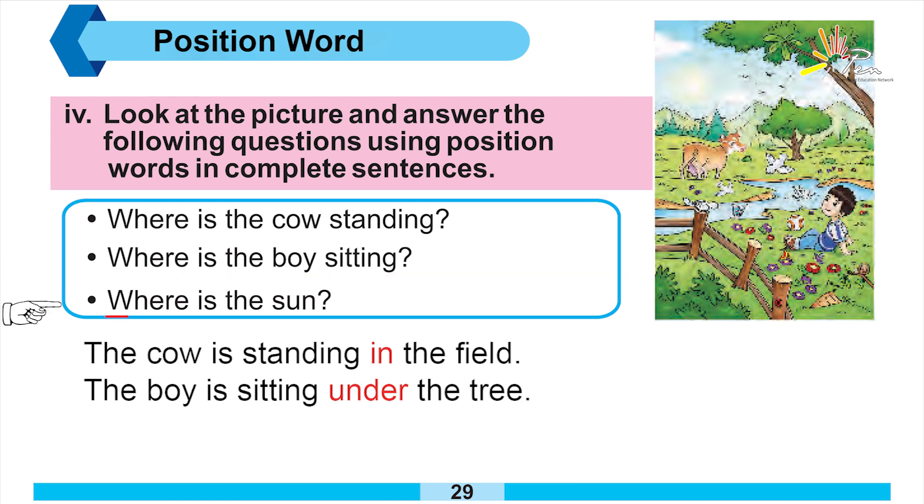Next question number three is where is the sun? Where is the position? That's why they ask where in the question. The sun is behind the mountains. So here we have the word used 'behind'. Behind means behind anything.